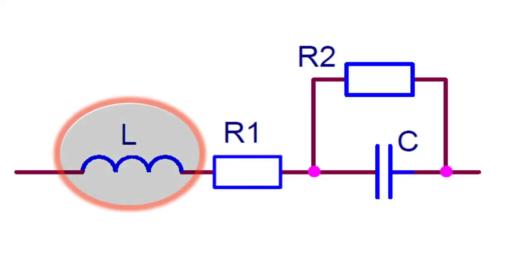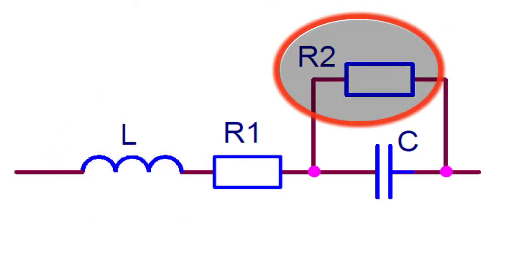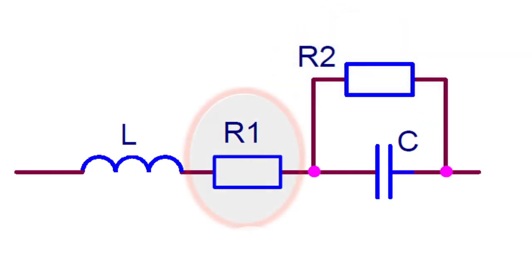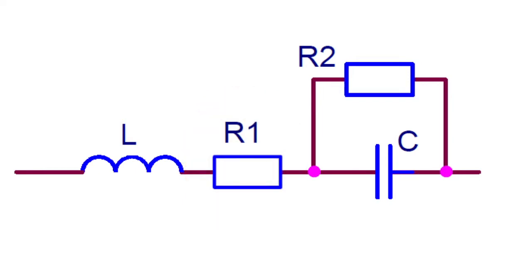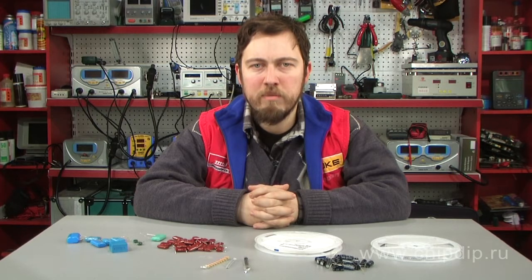Both the capacitor's leads and its general structure give rise to inductance, expressed as L. The resistance R2 stands for the parallel leakage resistance and depends on the bulk resistivity of the dielectric. The resistance R1 represents the capacitor's equivalent series resistance, which depends on the loss tangent of the dielectric.